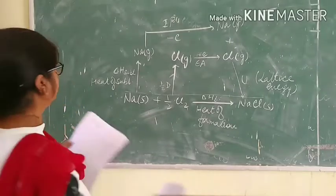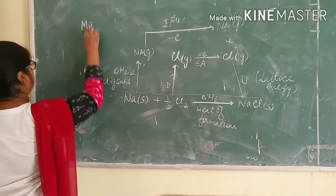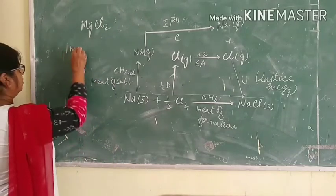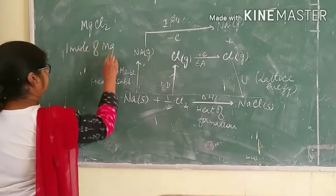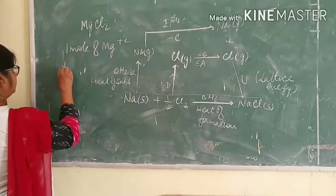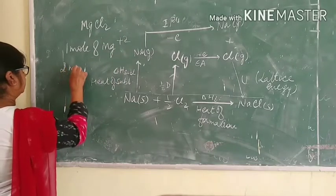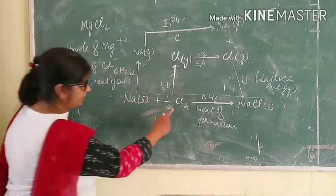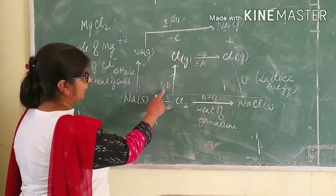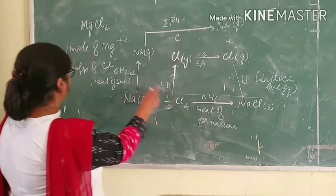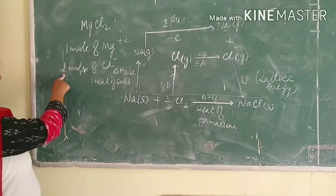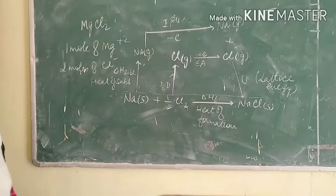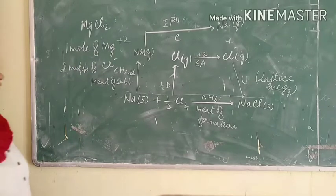Similarly, we can draw the Born-Haber cycle for magnesium chloride. In this case, since we need one mole of magnesium and two moles of chloride ions, we will require the complete dissociation energy of chlorine — not just half — because two moles of chloride ions are required. We can draw the Born-Haber cycle for magnesium chloride in the same way as we have drawn it for sodium chloride.